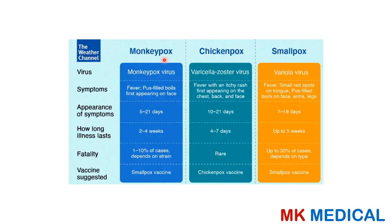Here is the difference between monkey pox, chicken pox, and small pox. Monkey pox is caused by monkey pox virus — fever and pus-filled boils first appear on the face; incubation 5 to 21 days; lasts 2 to 4 weeks; fatality 1 to 10%. Chicken pox is caused by varicella zoster virus — fever with itchy rash first appearing on the chest, back, and face; incubation 10 to 21 days; lasts 4 to 7 days; fatality quite rare. Small pox is caused by variola virus — fever, small red spots on the tongue, and pus-filled boils on face, arms, and legs; incubation 7 to 19 days; lasts up to 5 weeks; up to 30% of cases have severe forms. Vaccination is suggested for all three conditions.